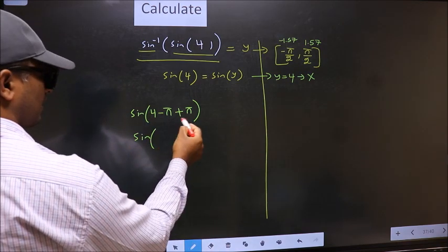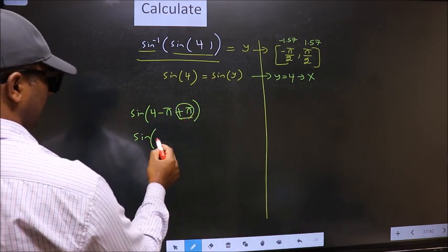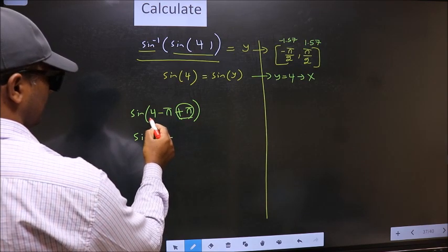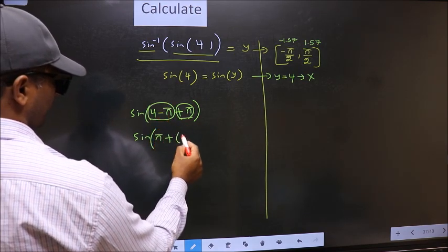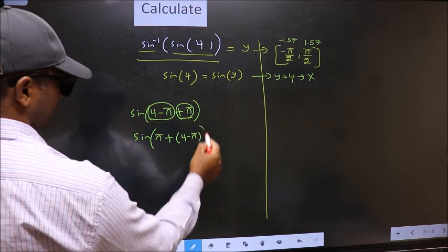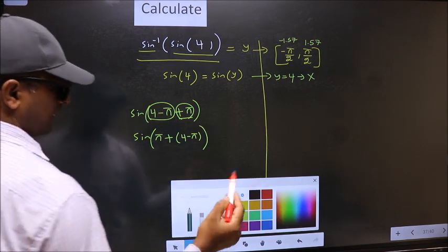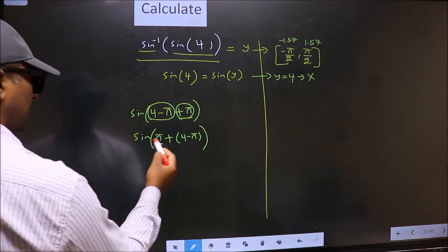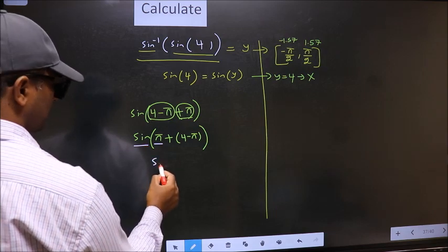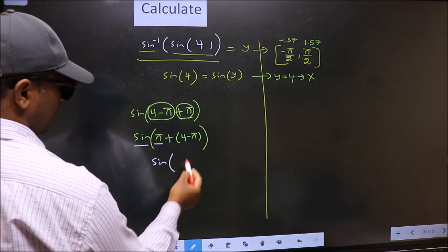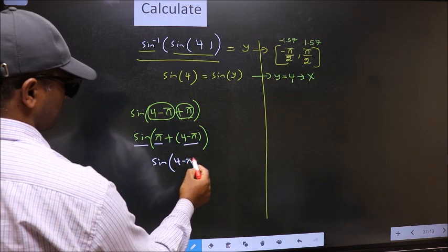Sin. Now pi I write at the start, then this one, 4 minus pi. Here we have pi, so sin is not going to change. It will remain sin, and inside we get this angle 4 minus pi.